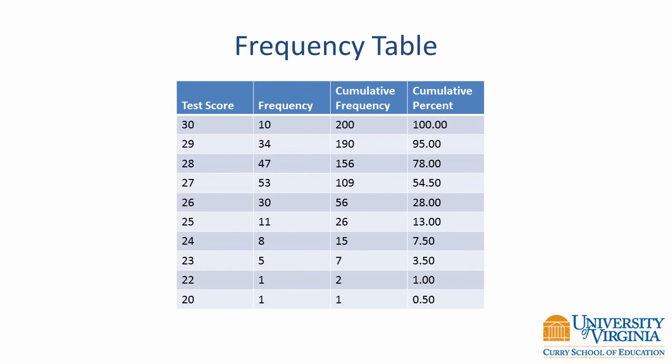The third column shows the cumulative frequencies. Frequencies are summed in a cumulative fashion from the lowest score, the bottom row of the table, to the highest score, the value in the top row of the table. Dividing each cumulative frequency by the total sample size of 200 and multiplying by 100 results in the cumulative percentage, which is shown in the last column.